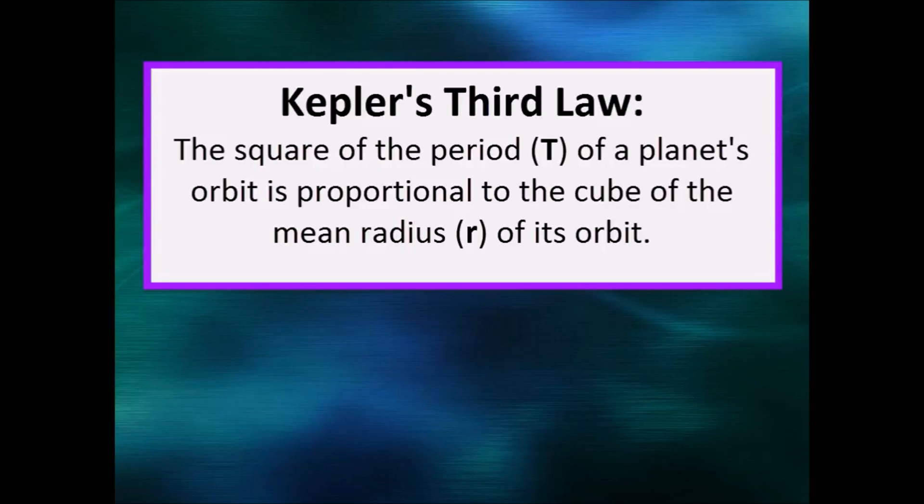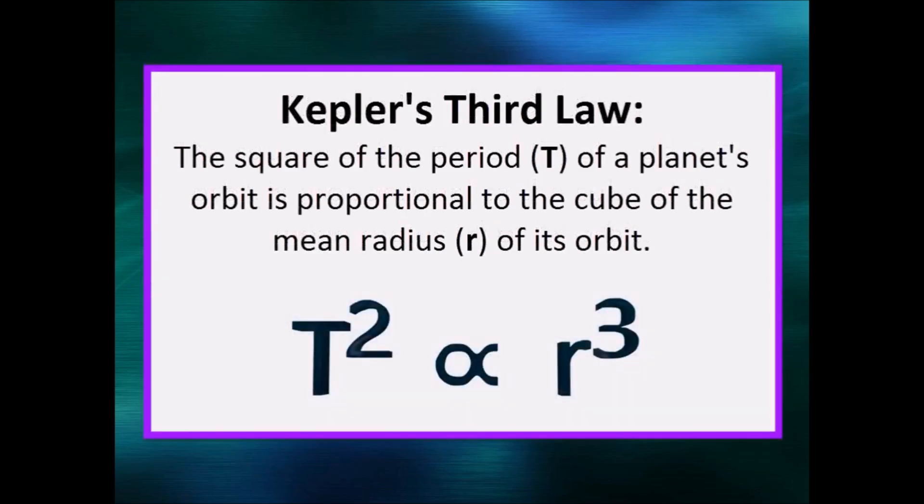Finally, we have Kepler's third law. This one is a heavily mathematical statement. The square of the period of a planet's orbit is proportional to the cube of the mean radius of its orbit. You can express the law as an equation like this, but what in the world does it mean?